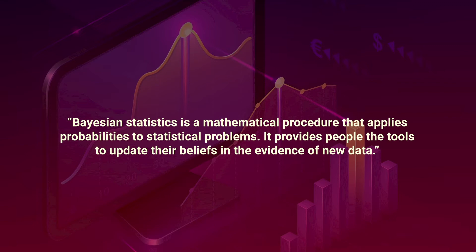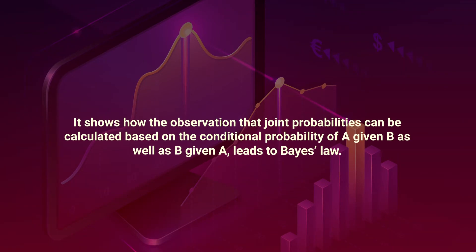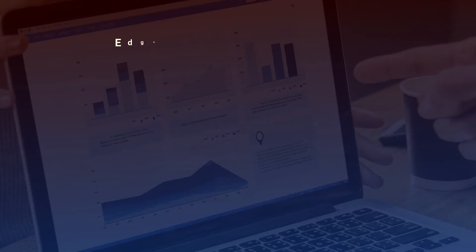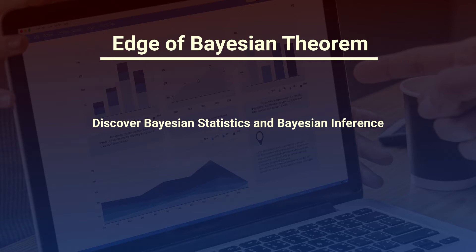Bayesian statistics is a mathematical procedure that applies probabilities to statistical problems. It provides people the tools to update their belief in light of new data. This video aims to derive and intuitively explain Bayes' law. It shows how the observation that joint probabilities can be calculated based on the conditional probability of A given B as well as B given A leads to Bayes' law. The drawback of frequentist statistics has led to the need for Bayesian statistics.